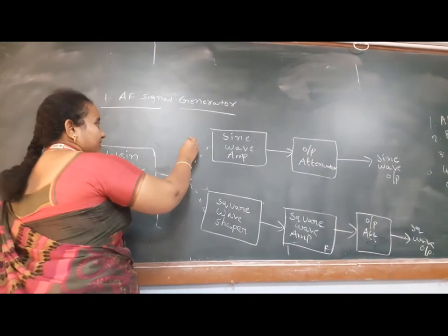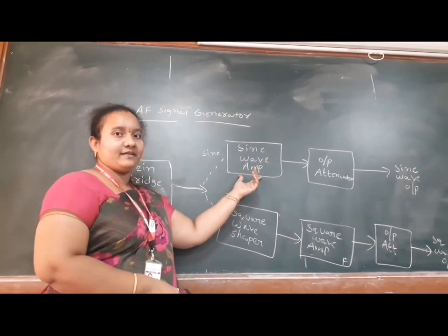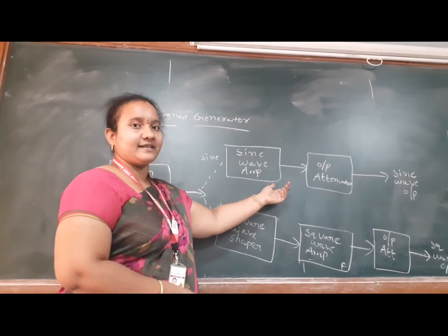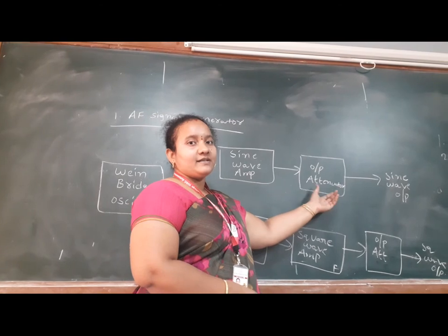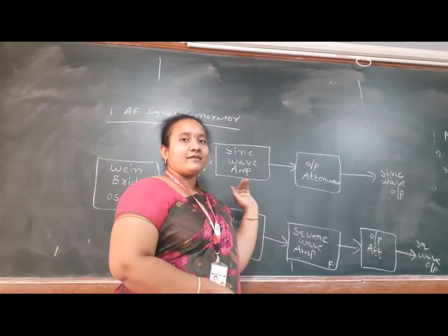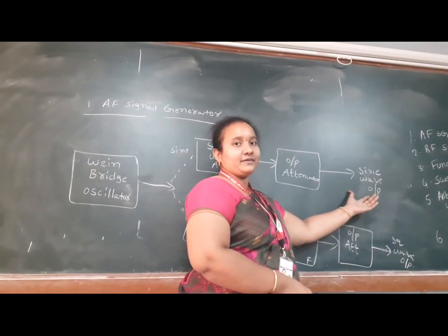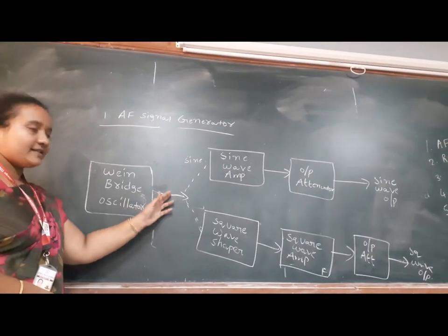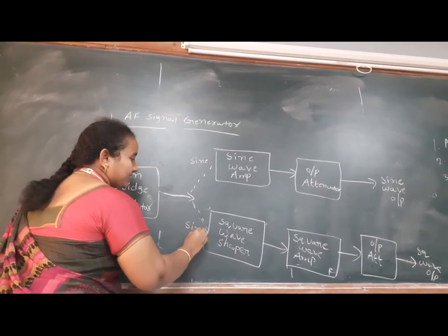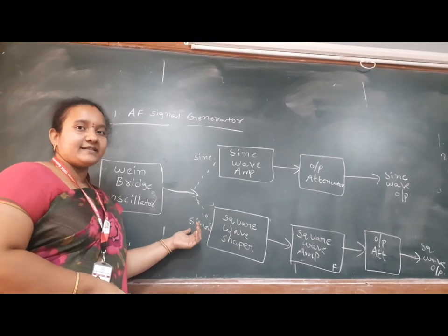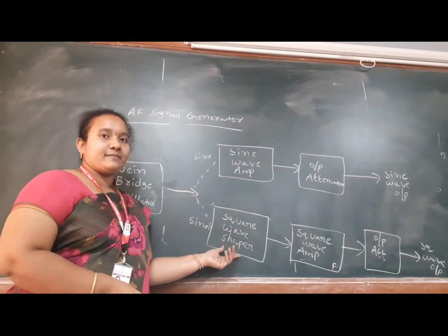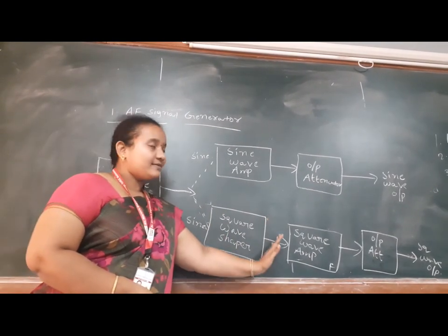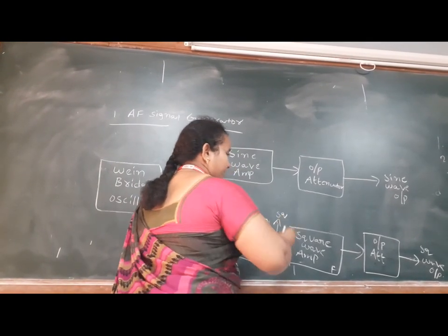If the switch is connected to the first path, the sine signal is applied as input to the sine wave amplifier. The purpose of the amplifier is to improve the strength of the sinusoidal signal, so finally we get an amplified version of the sinusoidal signal. This amplified version is then given to the output attenuator, whose main purpose is to limit high power or high voltage values. Finally we get the sine wave as output.